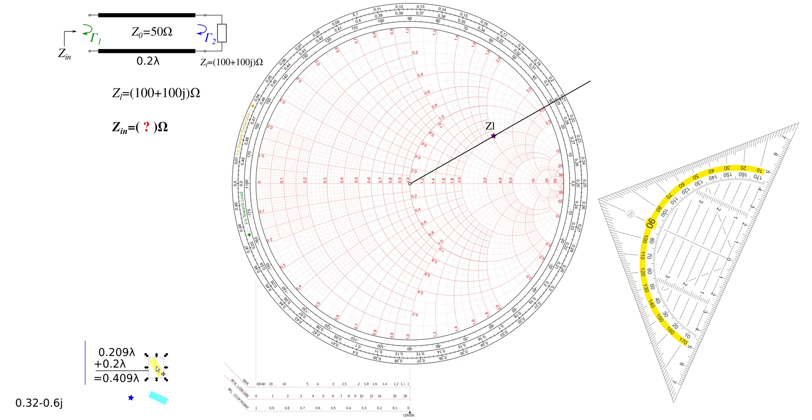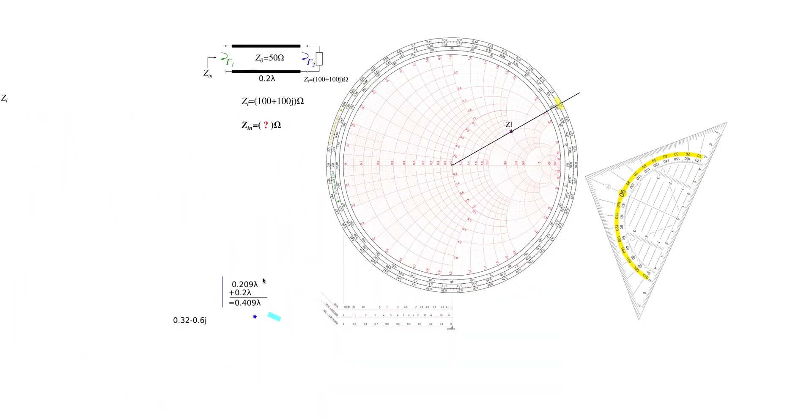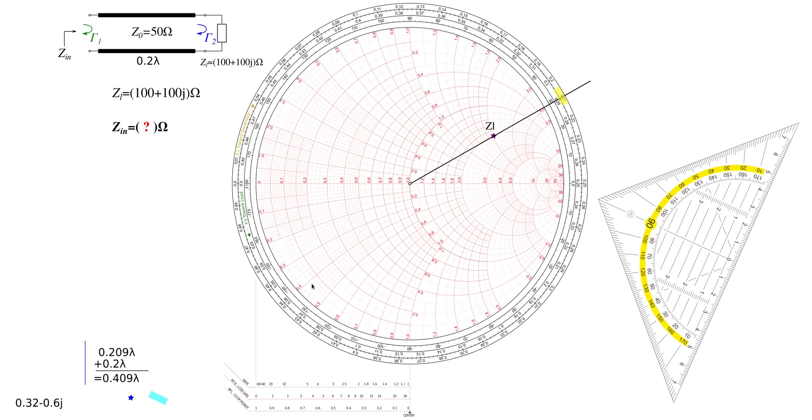So what's my starting angle? Let's see. I have to look at this value here. And we see this value is a little bit less than 0.21. So I prepared this here already. So we start with an angle of about 0.209 lambda.